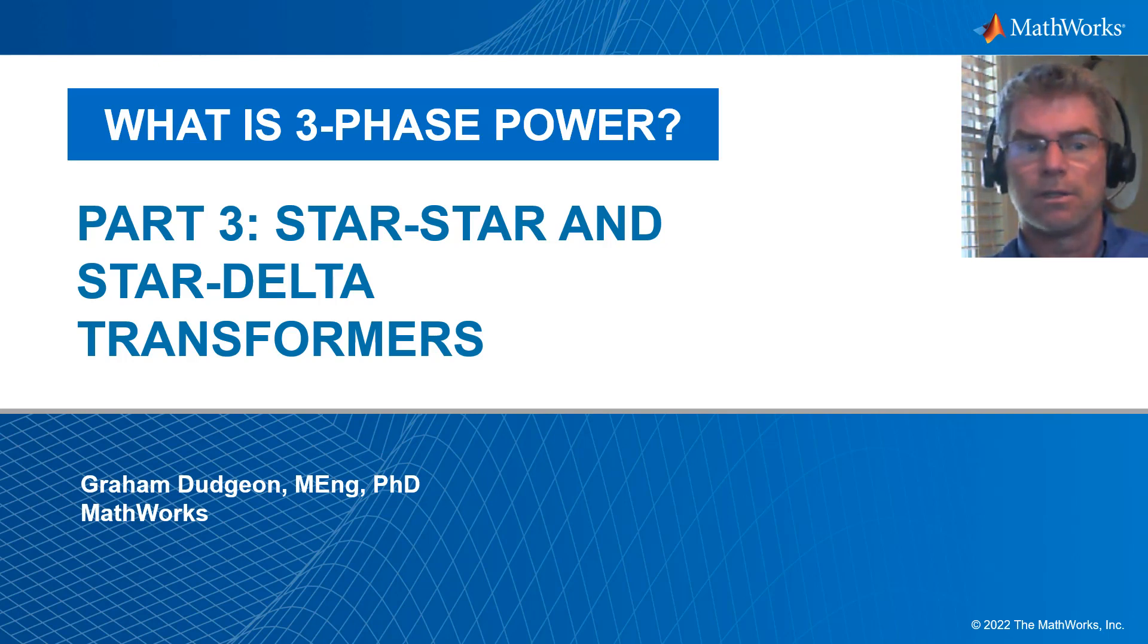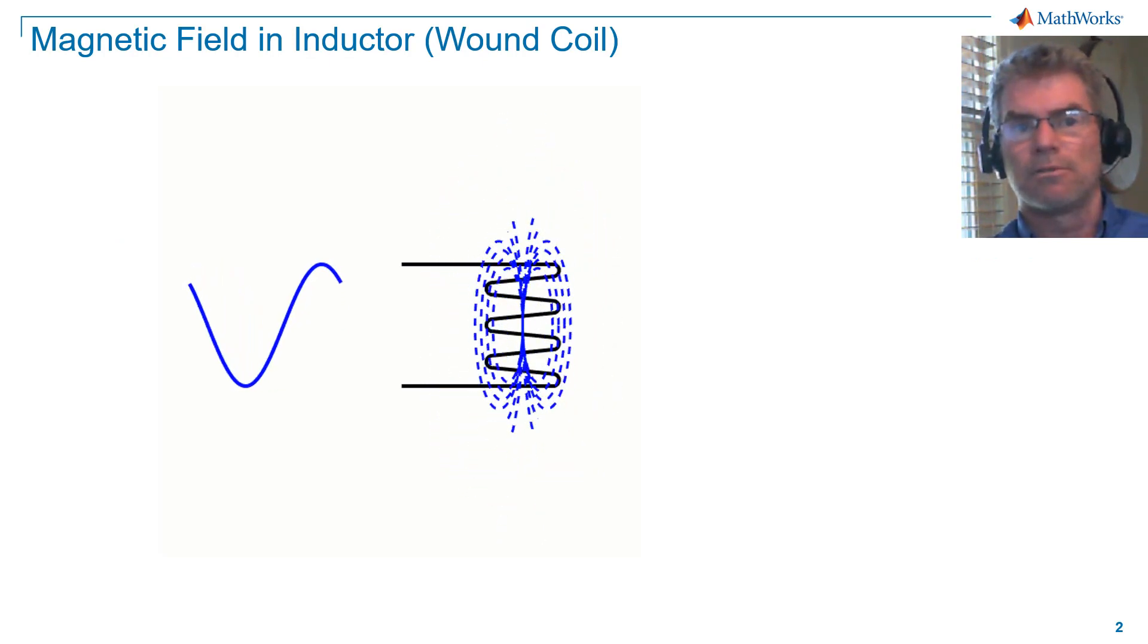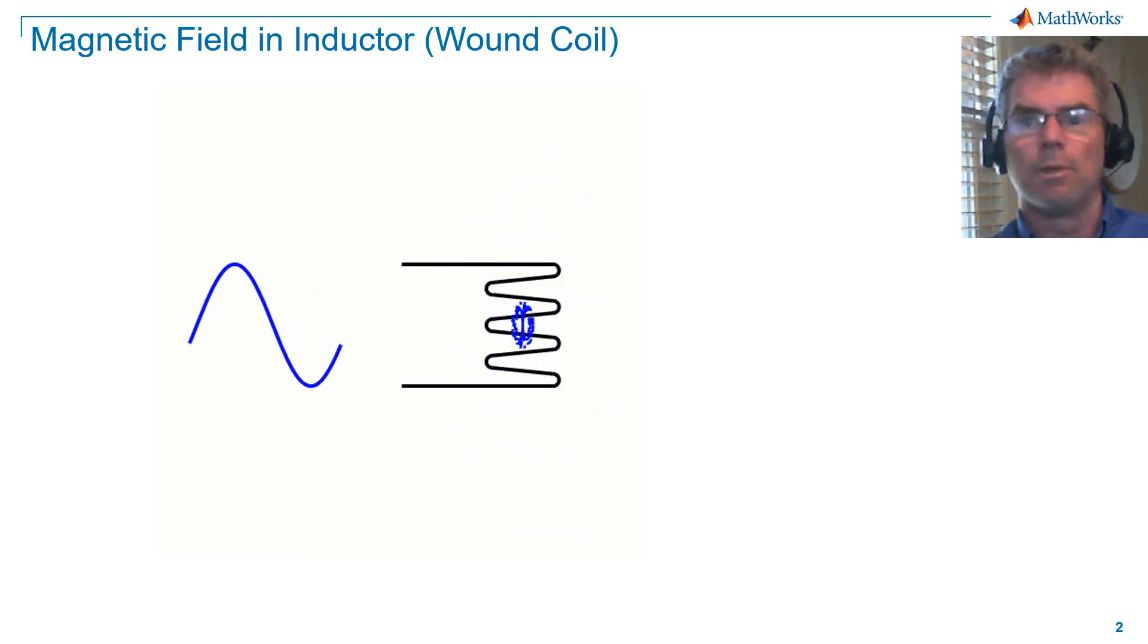Today we will explore star-star and star-delta transformers. Note that star is also referred to as Y. We'll begin by considering what a transformer actually is and use single phase to set the context before we move to 3-phase.